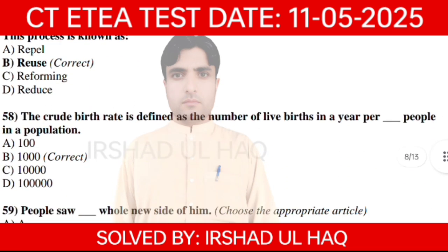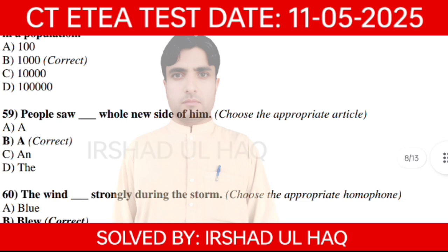The crude birth rate is defined as the number of live births in a year per 1000 people in a population. B is the correct option.